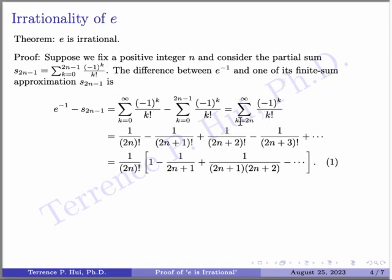Every term in the remainder series has a factor of (2N) factorial, because (2N plus 1) factorial equals (2N plus 1) times (2N) factorial, and so on. So I factor out 1 over (2N) factorial. The first term becomes 1, then minus 1 over (2N plus 1), plus 1 over (2N plus 2)(2N plus 1), and so on. This gives us Expression 1: E to the minus 1 minus S(2N minus 1) equals (1 over (2N) factorial) times a square-bracket expression.